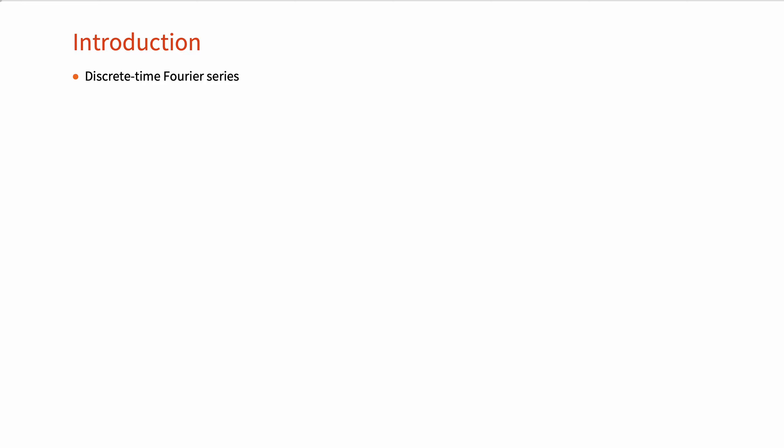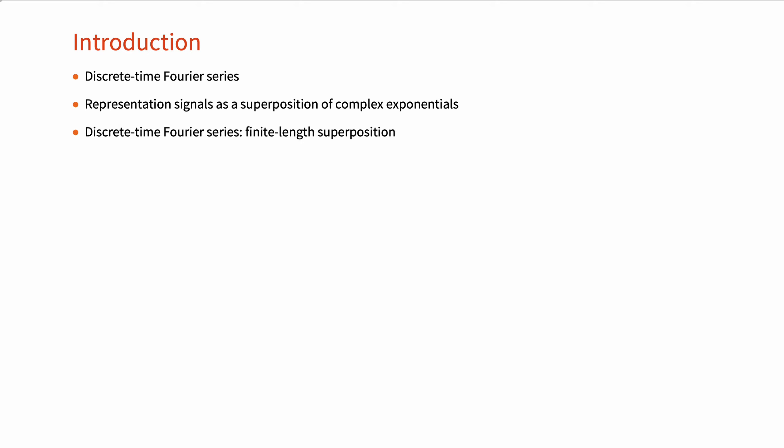As it was the case with the continuous time Fourier series, the discrete time Fourier series is a representation of a signal as a superposition of complex exponentials. In contrast to continuous time Fourier series, the discrete time Fourier series is a finite length superposition, and therefore it can be easily evaluated numerically. The Fast Fourier Transform is an algorithm developed to rapidly compute Fourier series coefficients by reducing the complexity of computation to help with the fast processing of digital signals on a computer.